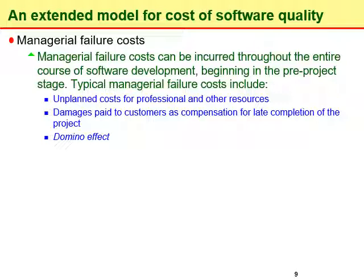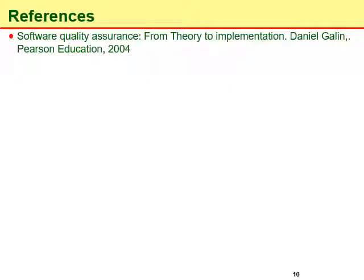It is important to understand that estimating the cost of software quality can not only help managers gain economic control over project activities, but is also useful in adjusting spending on various quality assurance activities. The materials in this video are based on the book titled 'Software Quality Assurance: From Theory to Implementation' by Daniel Cannon. For more details, you can consult the book. Thank you.